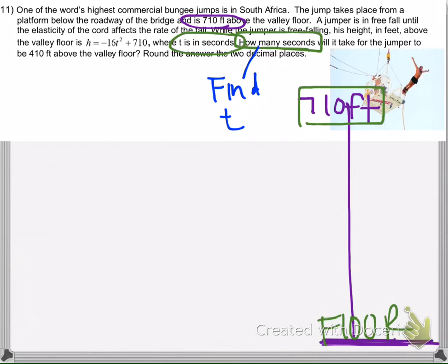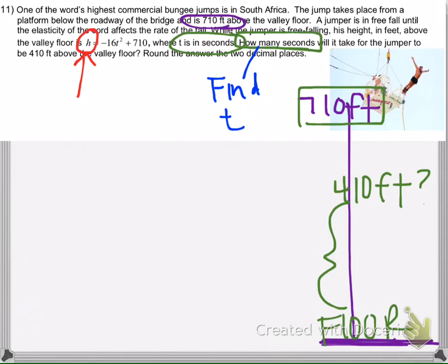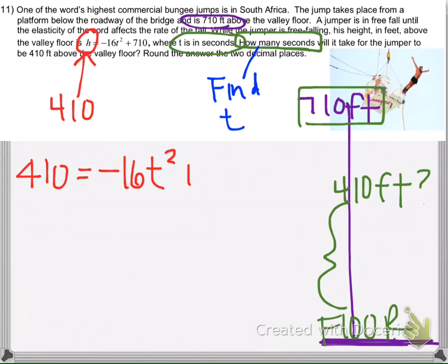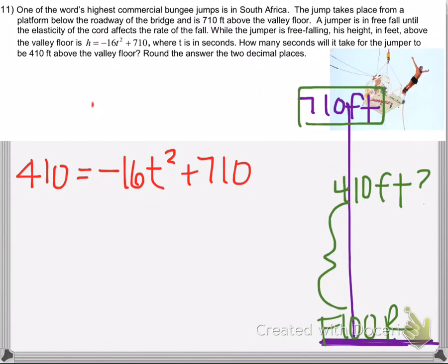In other words, when will the bungee jumper be right here at 410 feet? So instead of H, the height, we substitute 410 and solve this equation. The directions say to round the answer to two decimal places, so we might get a decimal answer.